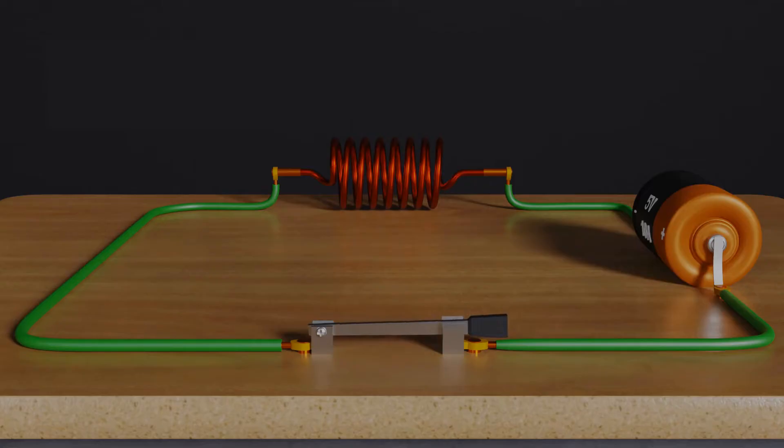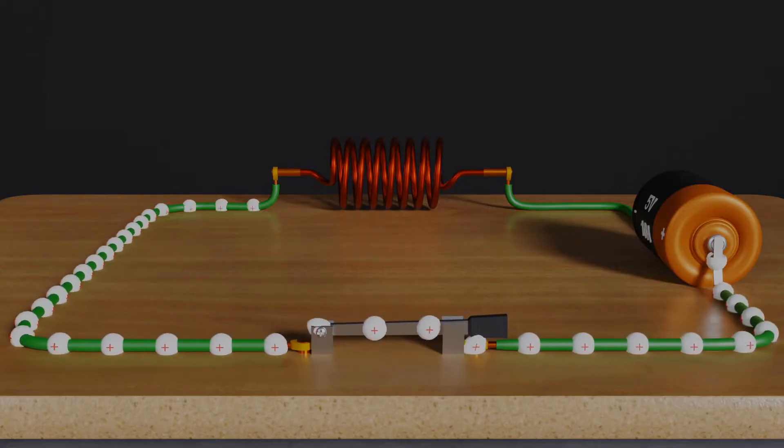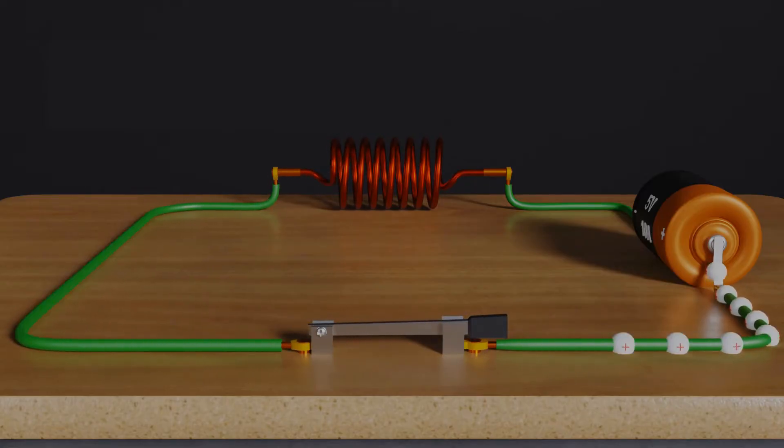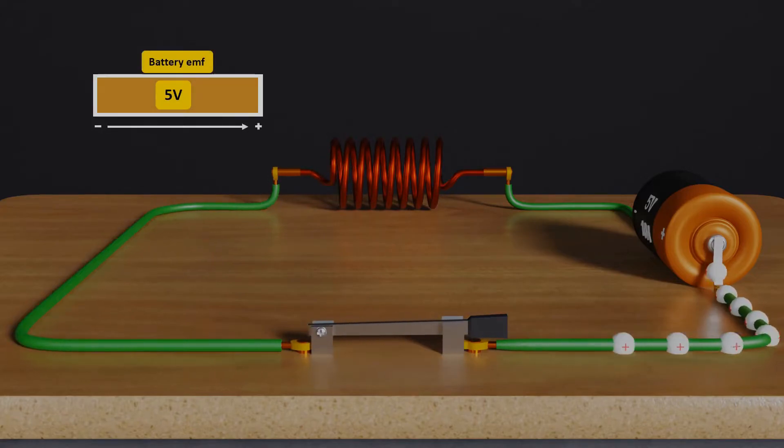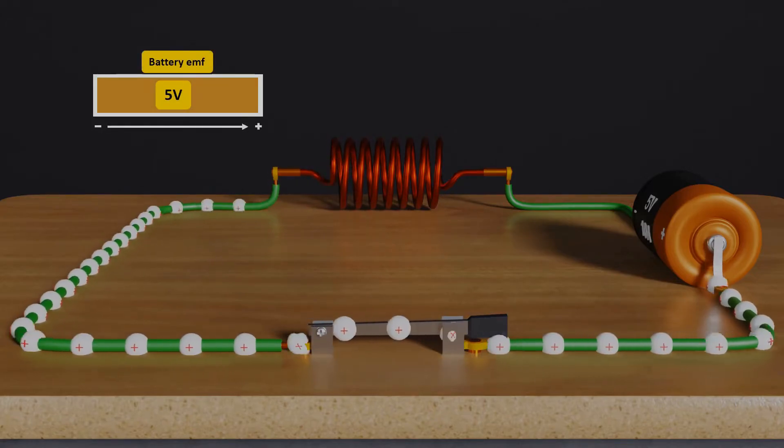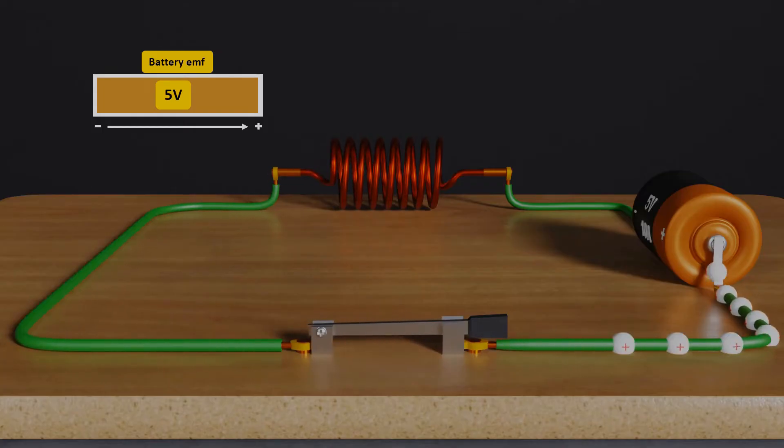As soon as we switch on, the initial current starts changing quickly. Let us assume initially 1 ampere of current with the EMF of the battery flows very fast and will change quickly from 0 to 1 ampere.